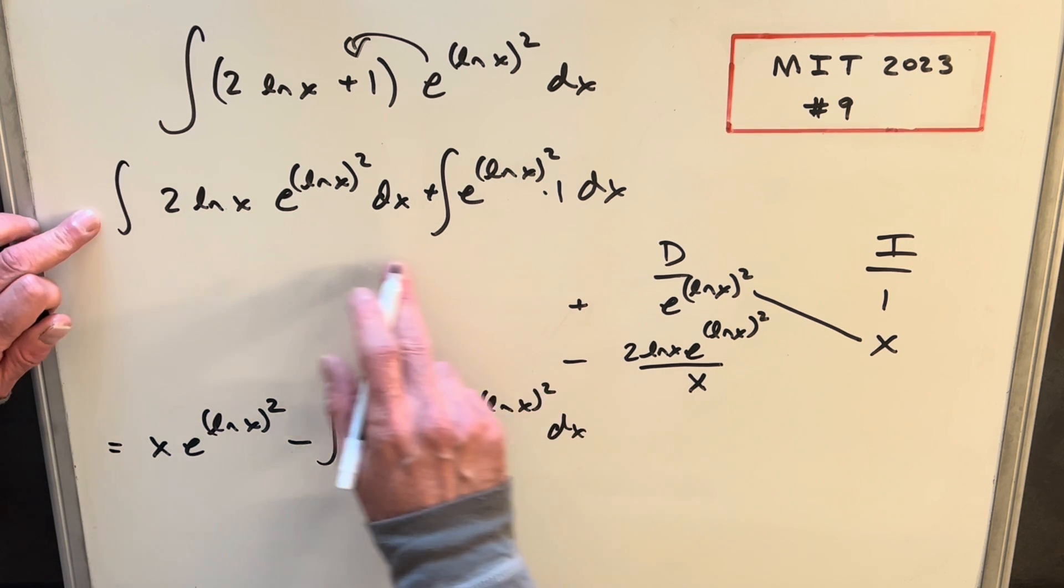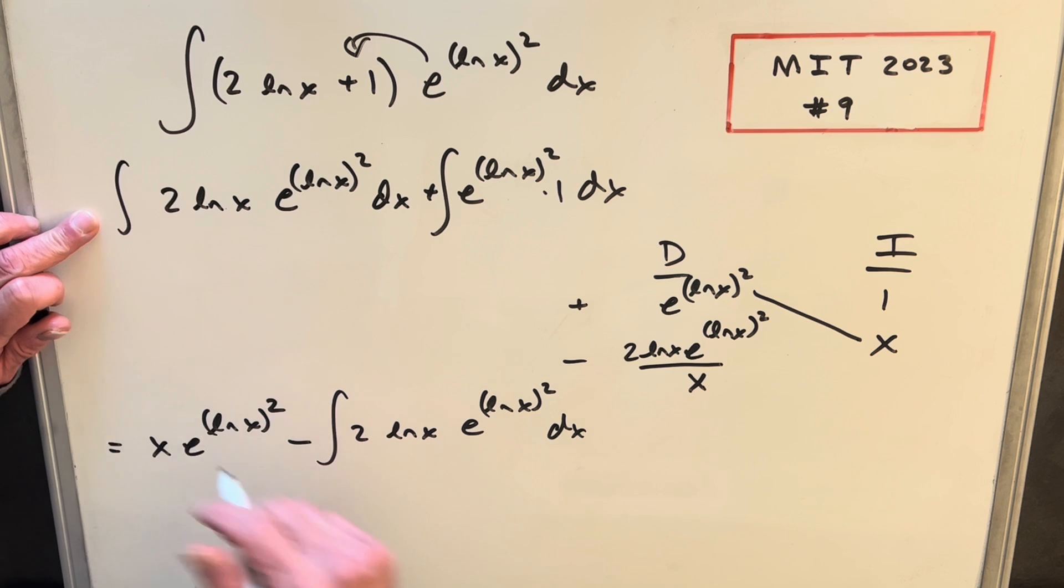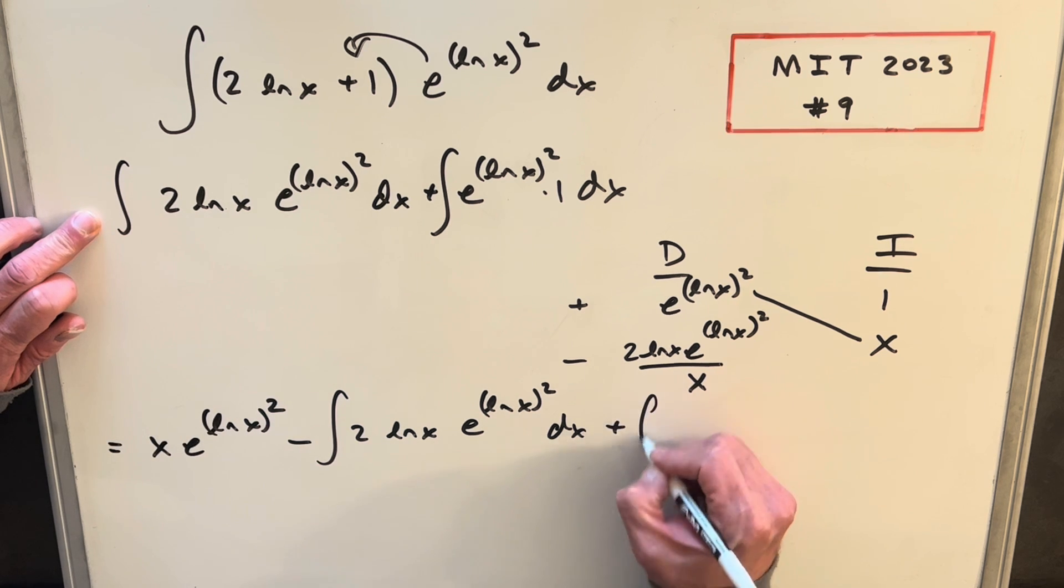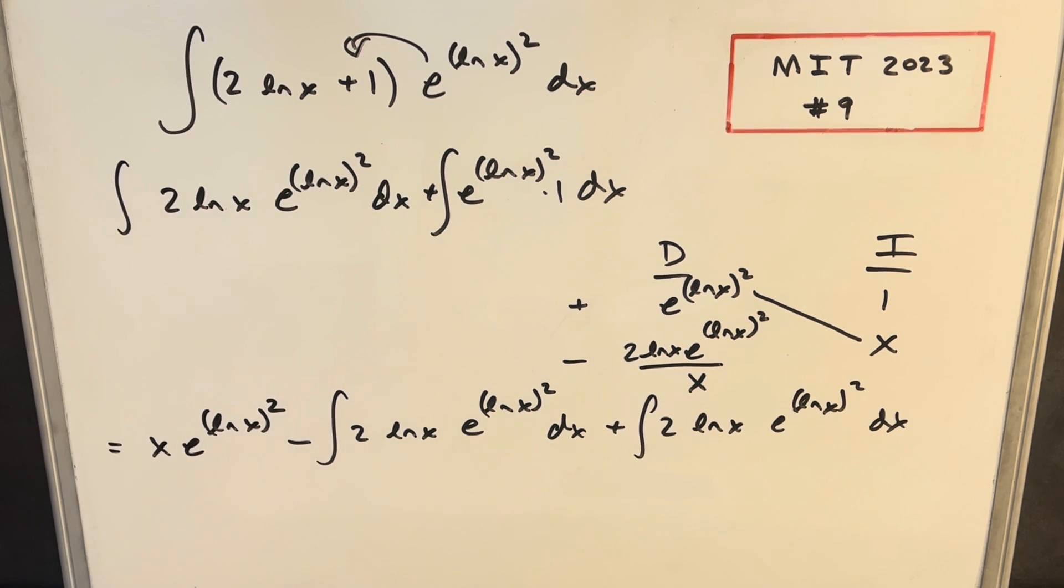And then going back to our original problem, though, we don't want to forget our other integral. So let's just add that on here so we keep track of everything. Because what's going to happen is this integral and this integral are exactly the same. We're subtracting it off here. So this is going to cancel this. That's all going to be 0. And we're just left with this piece.